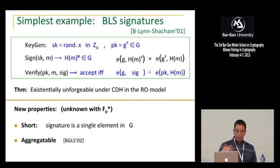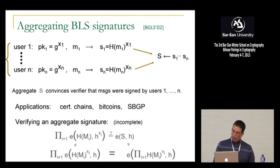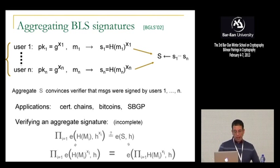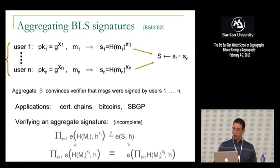The other property is something we haven't seen with discrete log type signatures: it's actually fairly easy to aggregate a lot of signatures and compress them into one. So how do we aggregate these signatures? Imagine the following setting: we have N users, each with their own public key. Public key i is G to the X_i. We have N messages, and each user signs their own message. The signatures are H(M_i) to the X_i. We can take all these N signatures on N different messages by N different users and compress them into a really short signature that's as good as all the signatures combined — that's why it's called an aggregate signature.